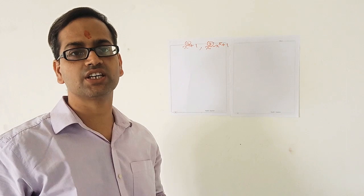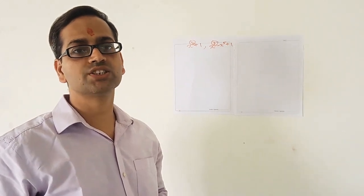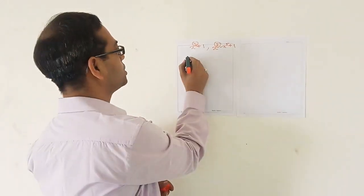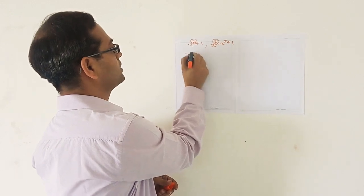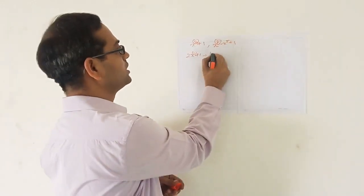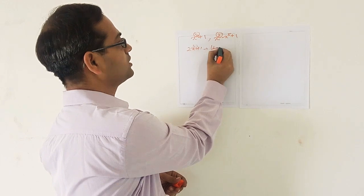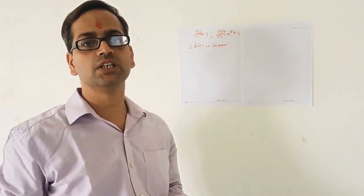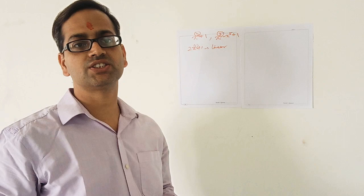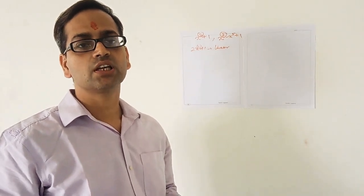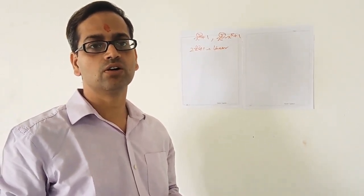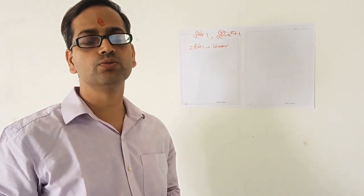If the polynomial has the highest power of variable x as 1, we call it a linear polynomial. For example, 2x + 1 — the power of x is 1, so it is a linear polynomial. Another example of a linear polynomial would be 3x - 7. Now if the highest power or the degree of the polynomial is 2,